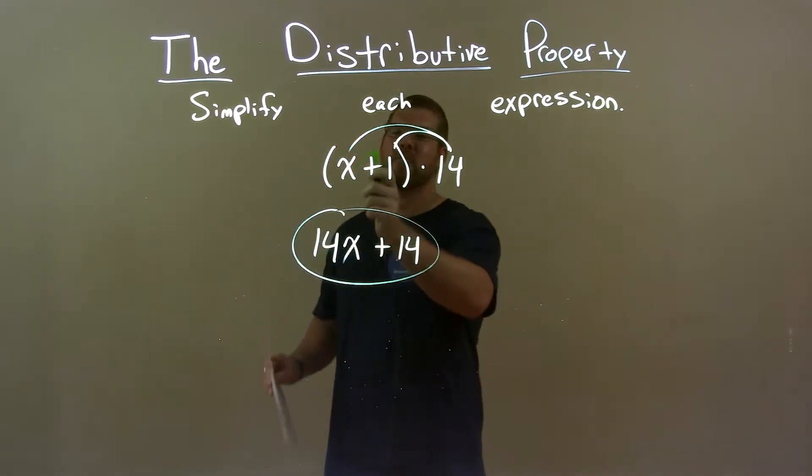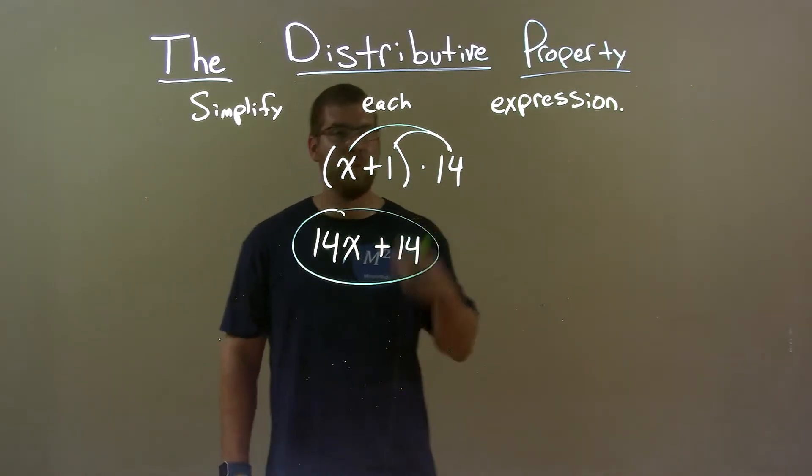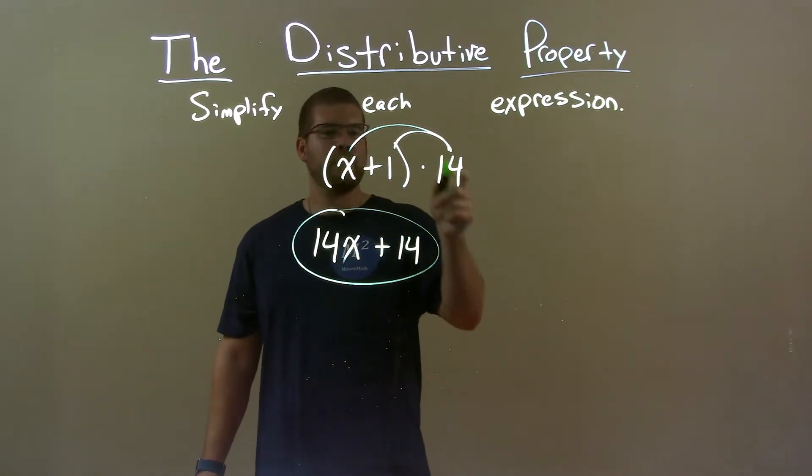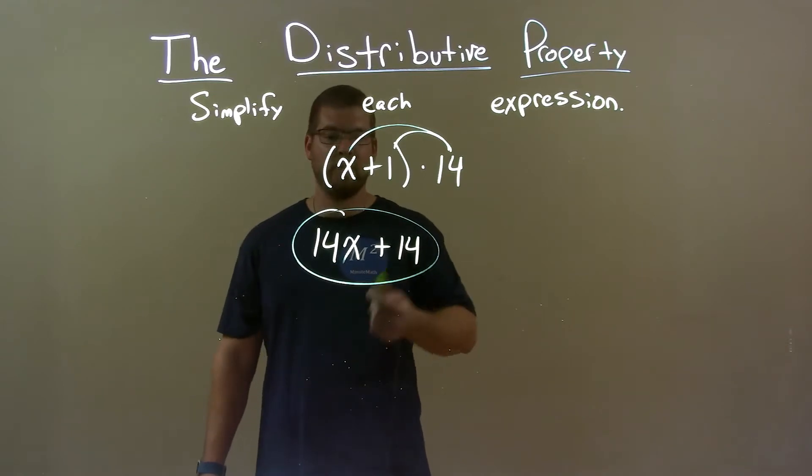Quick recap, we're given x plus 1 times 14 and we gotta simplify this expression. Well, distribute 14 to both parts and that was it. Final answer, 14x plus 14.